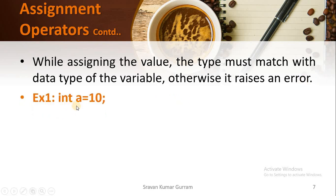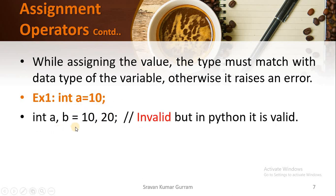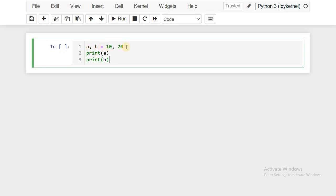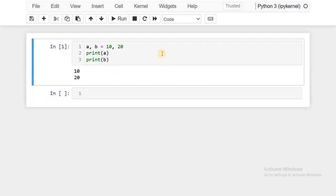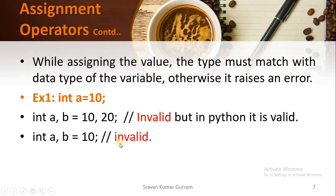See this example: int a = 10. Here we are trying to assign multiple values into multiple variables using a single statement. If you execute this, we will get the output without facing any errors. See here: int a, b = 10 — in Java this is invalid, but it is valid in Python. Also, a, b = 10, 20 — we are trying to assign multiple values to multiple variables using a single statement — if you execute this it works. But int a, b = 10 is also invalid in Java.